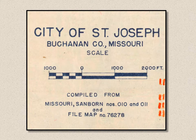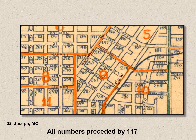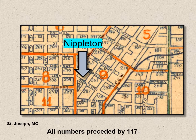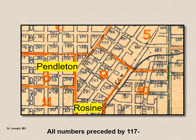When I proofed the St. Joseph map, what jumped out at me was a street called 'Nippleton' — a strange name. When I looked at a modern map, that's not it — it's Middleton. Looking closer, Pendleton is misspelled, and Rosin lost its E. Also notice that the orange enumeration district numbers on this map are only a single number, not the two-part number I told you about. That nine is not the real number — the real number is 117-9. I'll explain why I added the prefix.